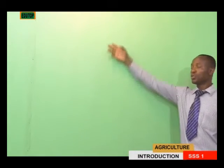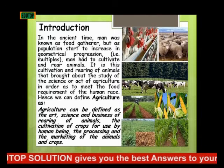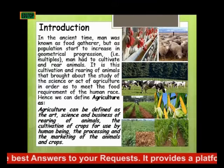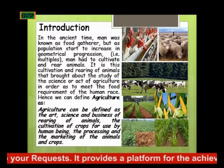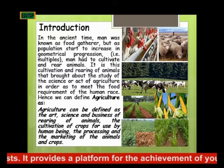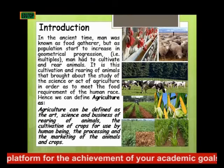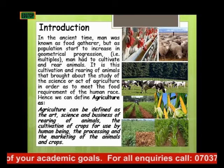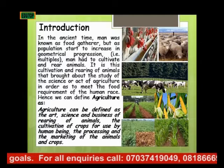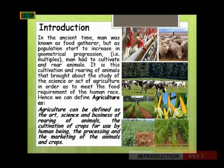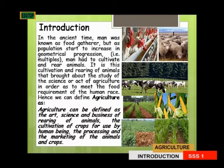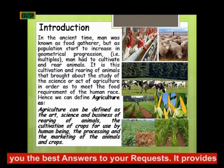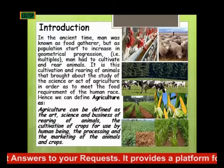Now we start with the introduction. In ancient times, man was known as a gatherer. As population started to increase geometrically, man had to cultivate crops and rear animals. When man started his life, he went into the wild, gathered fruits with his hands, and used a club to kill animals for meat. After killing an animal, he would strike two stones against each other to make fire, and then roast the meat to eat.